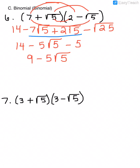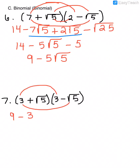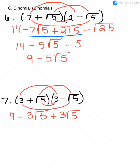Our last example: when multiplying a binomial times a binomial, these are conjugates — the same terms with a different sign in the middle. Using FOIL: 3 times 3 is 9. The outer two terms give negative 3√5, and the inner two terms give plus 3√5. A positive square root of 5 times a negative square root of 5 gives negative square root of 25. When combining like terms, negative 3√5 plus 3√5 cancel out. So we have 9 minus square root of 25, which is 5, and 9 minus 5 equals 4.